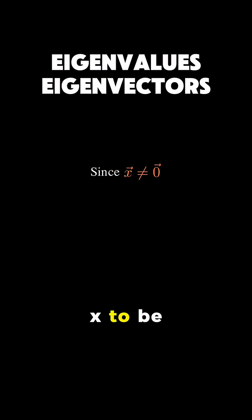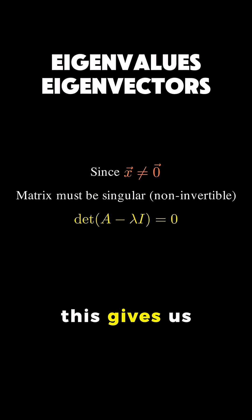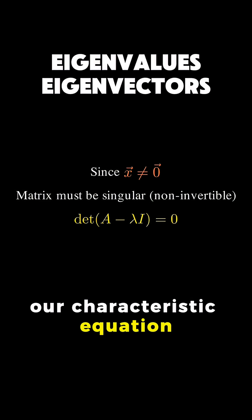Since we defined x to be non-zero, the only way this equation holds is if the matrix A minus lambda i is not invertible. And if a matrix is not invertible, its determinant must be zero. This gives us our characteristic equation.